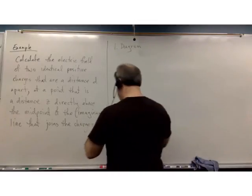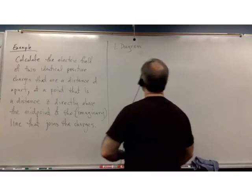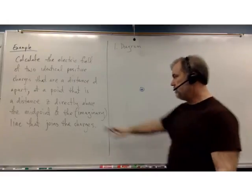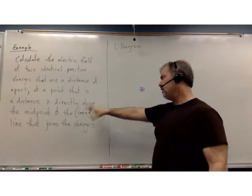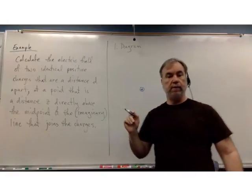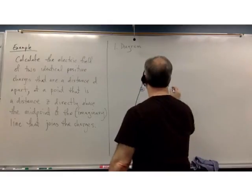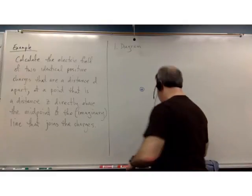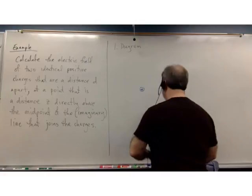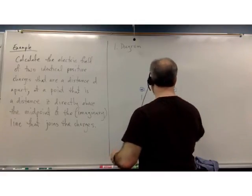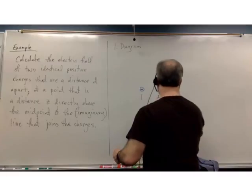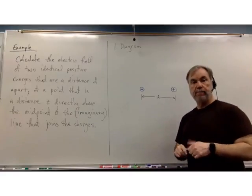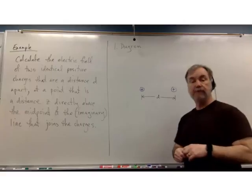We have a couple of positive charges. Now, it doesn't tell us their orientation except it hints that the location of point P is going to be above the midpoint of the two charges — so we should locate them horizontally. You'll notice annoyingly there are no numbers in this problem, which is what makes it somewhat more mathematically challenging.